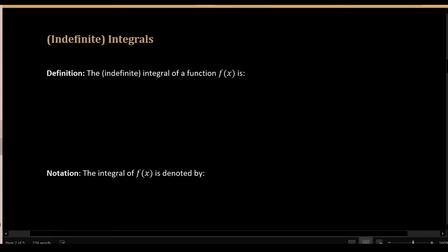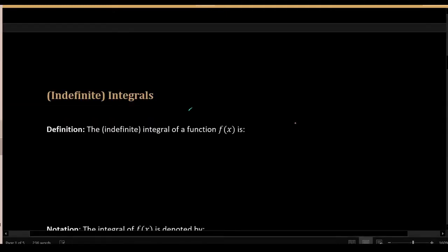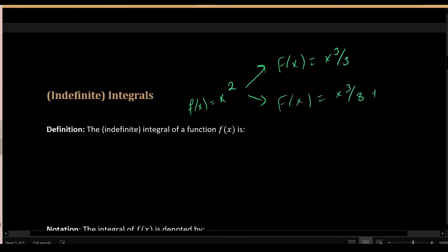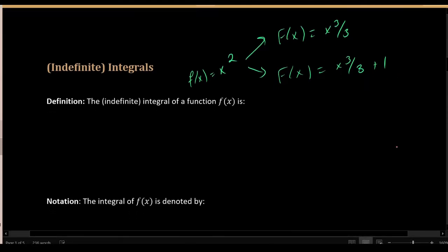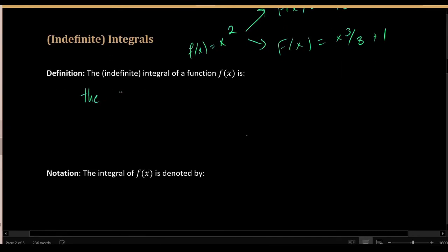In the previous video, we noted that a function could and did have more than one antiderivative. For example, for the function f of x equals x squared, we gave two antiderivatives: one of them was x cubed over 3, and one of them was x cubed over 3 plus 1. Both of these were antiderivatives because when we take the derivative, constants like plus 1 vanish and don't have any influence on the result. The indefinite integral of a function is the description of all its antiderivatives.